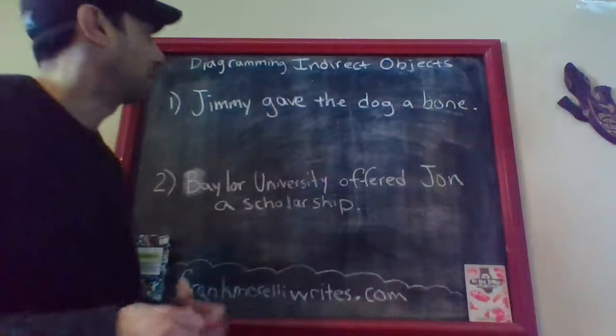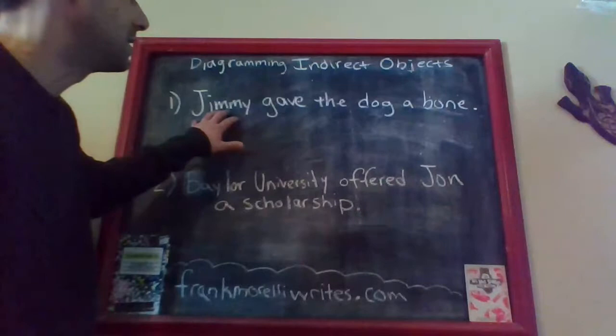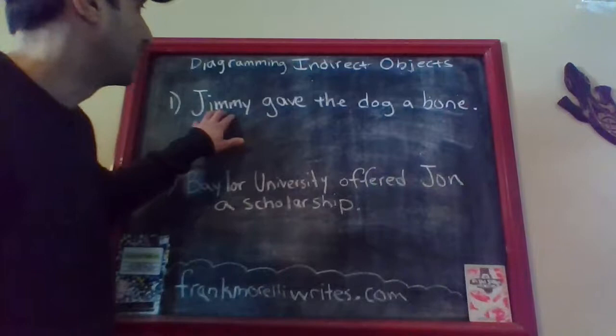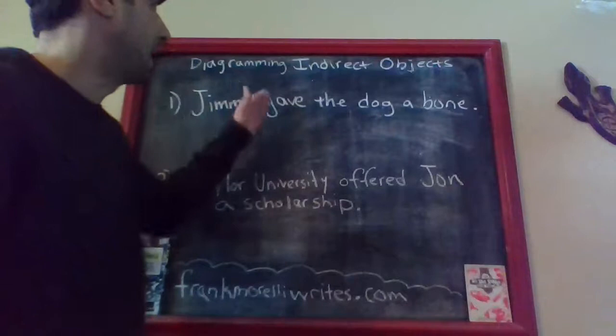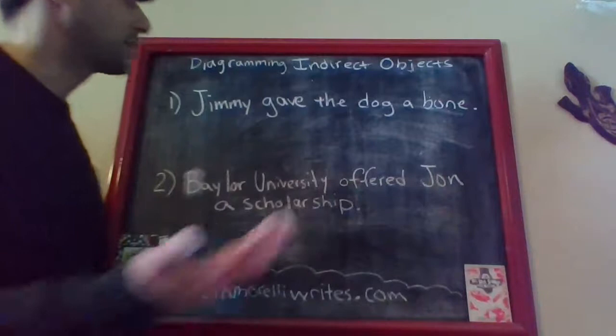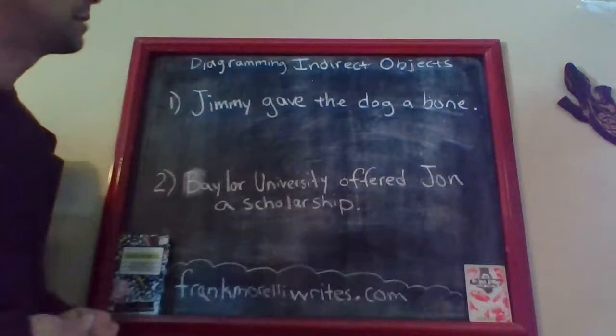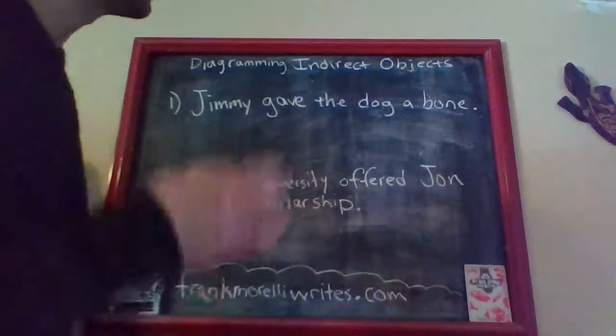Here we have the first sentence: 'Jimmy gave the dog a bone.' Let's take a look at the sentence before we try to diagram it. Since you've learned about diagramming, you can easily spot the pieces. Jimmy is the noun the sentence is about — that's your simple subject. The word 'gave' shows action, so that's your verb and simple predicate. We can ask: Jimmy gave what? Well, he gave a bone, not the dog — so 'bone' is your direct object. Whenever you have a direct object, you need to check for an indirect object — the word indirectly receiving the action.